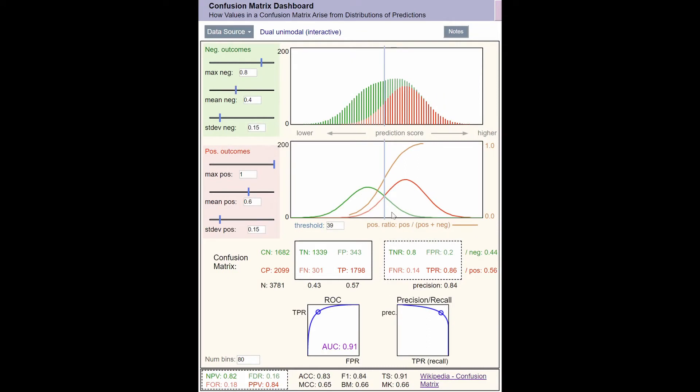The breakdown of predictions depends on the decision threshold. As we move the threshold to lower or higher prediction scores, predicted event counts shift between the negative prediction column and the positive prediction column.